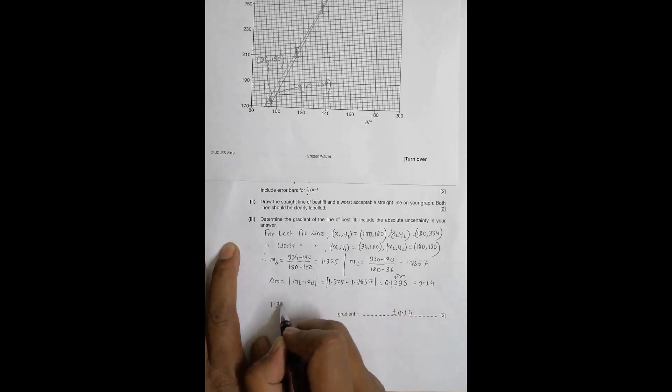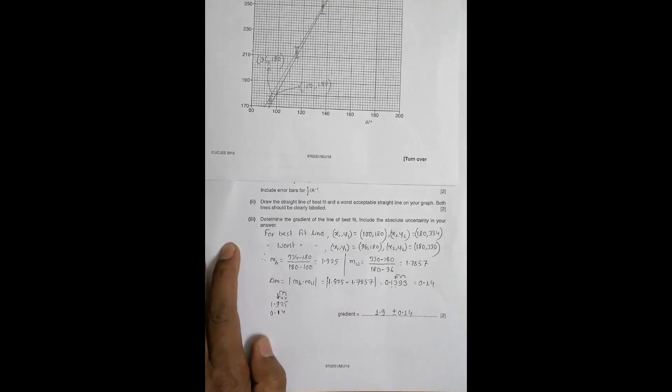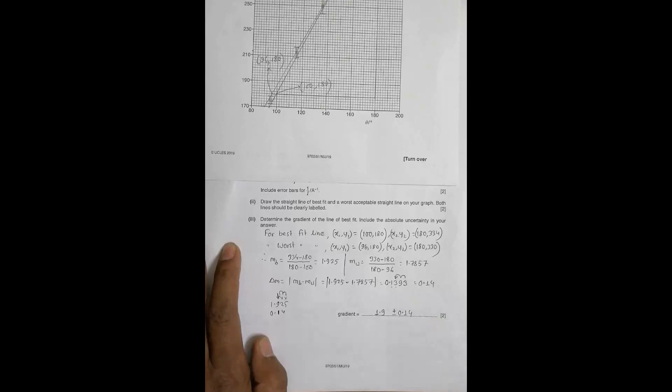So the uncertainty is plus or minus 0.14. Since the first digit of the uncertainty is in the hundredths place, I round the gradient to match: the gradient equals 1.9 plus or minus 0.14. If someone insists on one significant figure, the uncertainty would be 0.1 only — but my personal preference is two significant figures, because one SF gives a 40% error on the error itself, so two SF is better.